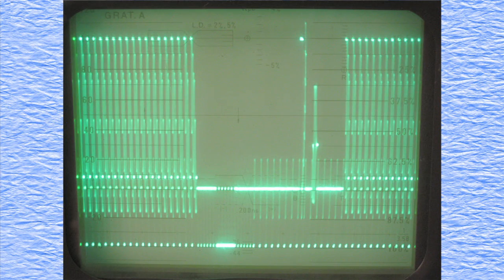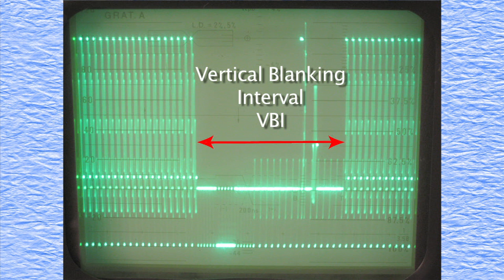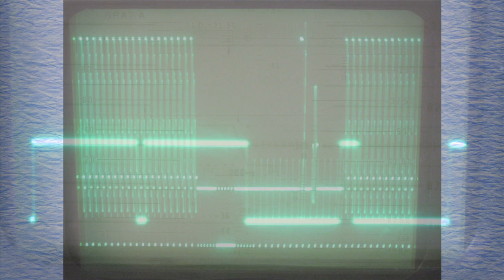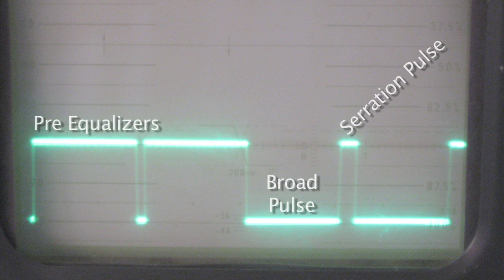In this waveform display, you can see the VBI, or vertical blanking interval. Here is the vertical sync pulses. And here you can see a close-up of the transition from the pre-equalizers to the serrations, or broad pulses.